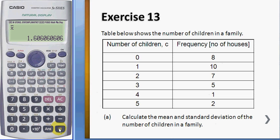You press AC and call shift one, number five. You want to find the standard deviation, so you can choose either number three or number four depending on which formula you want to use.